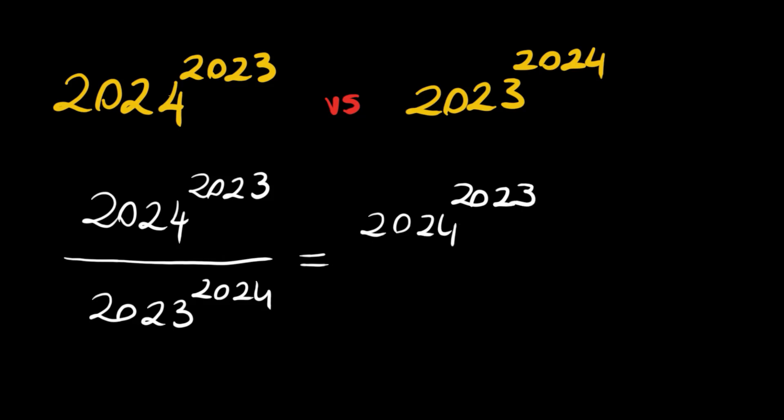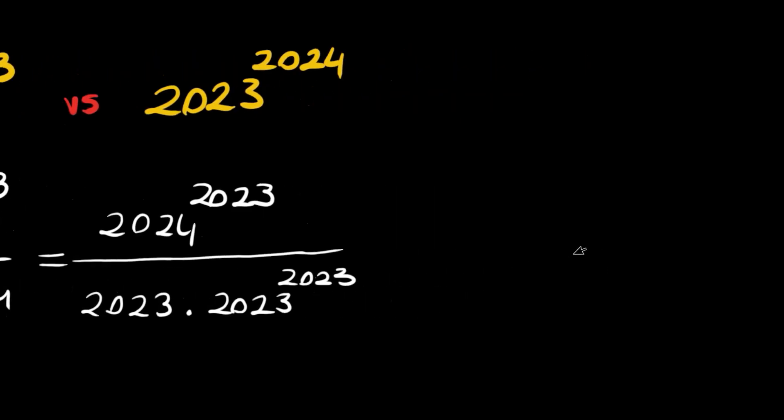Now let's write the denominator as 2023 times 2023 to power 2023. We can write this as one over 2023 times—these have the common power—so we have 2024 divided by 2023 raised to the power 2023.